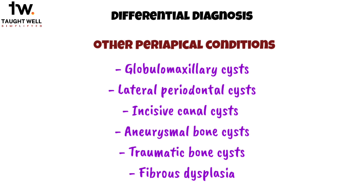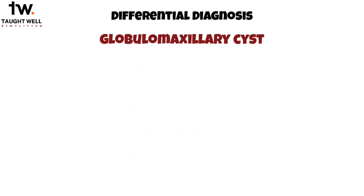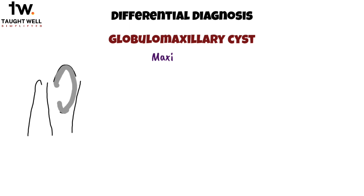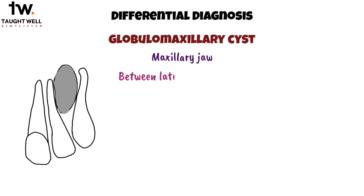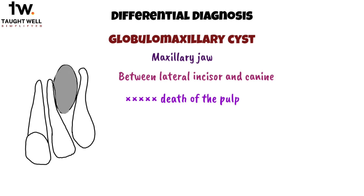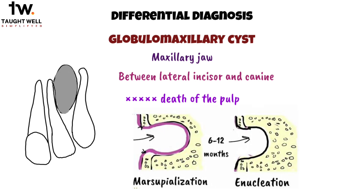Furthermore, it's crucial to differentiate cystic apical periodontitis from a globular maxillary cyst, which develops in the upper jaw between the roots of lateral and cuspid teeth. Unlike apical cysts, globular maxillary cysts do not result from the death of the pulp, and may be treated through marsupialization and later enucleation without affecting the pulp vitality of adjacent teeth.